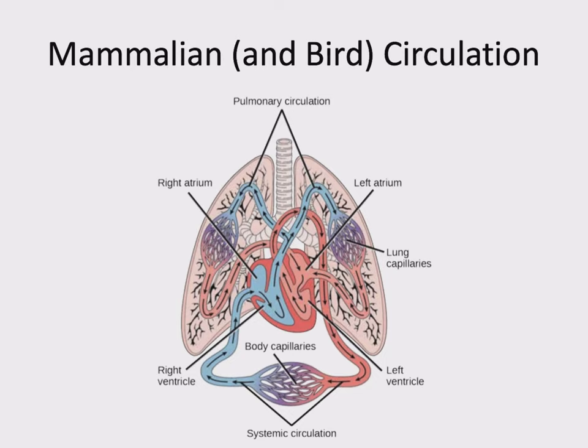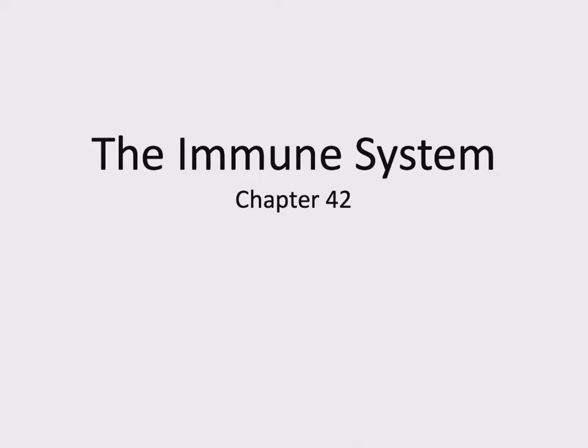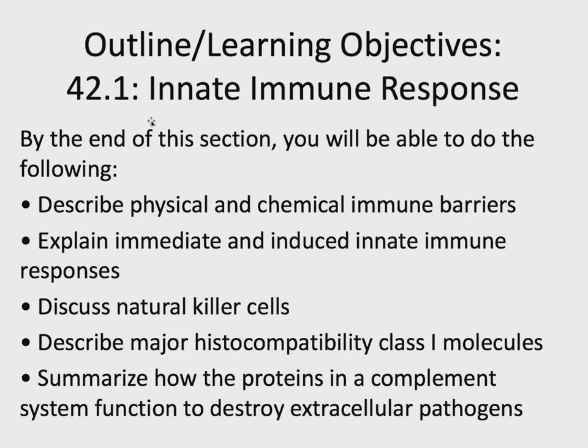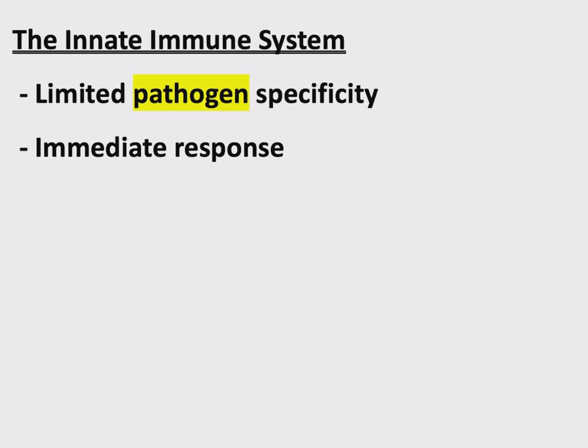That does it for the circulatory system. Now on to the immune system. This is going to be a big chapter, and we can divide the immune system into two basic halves: the innate immune system and the adaptive immune system. Let's start with the simpler one — the innate immune system.